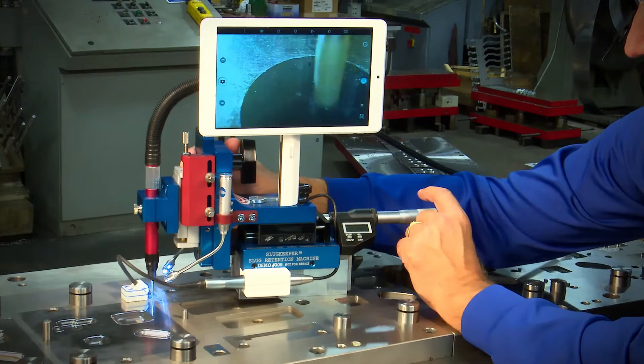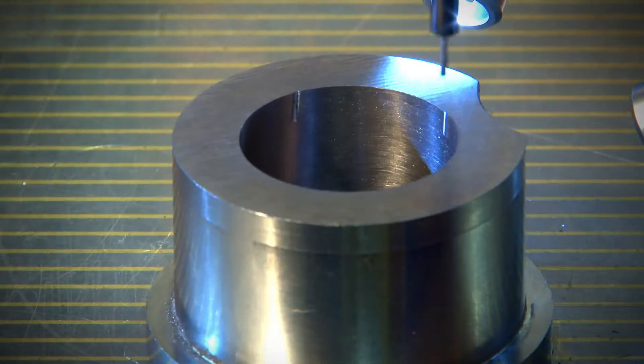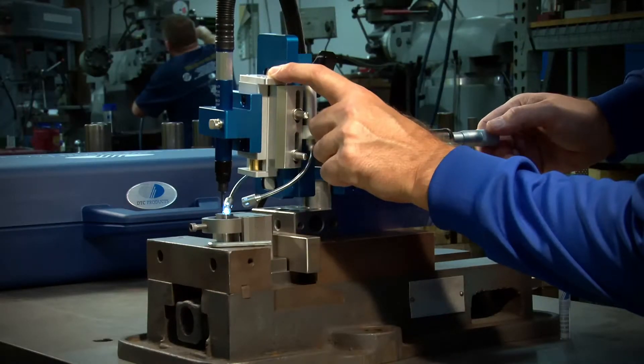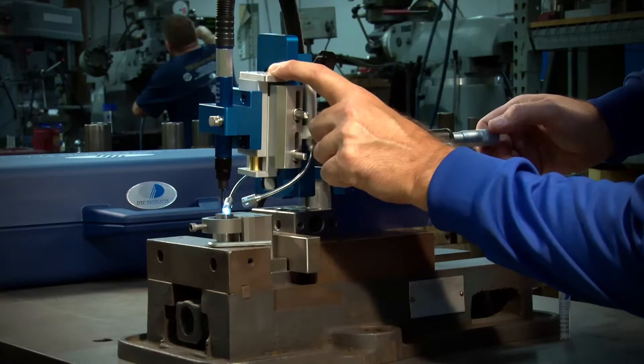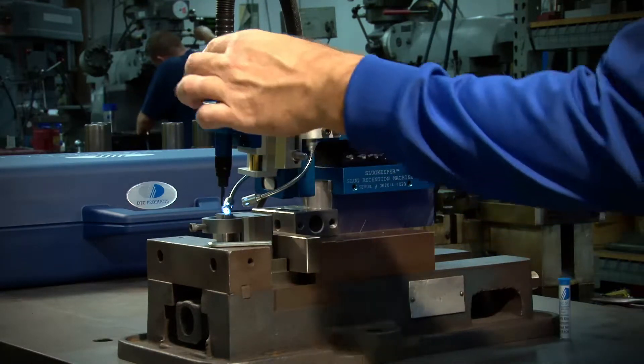The slug keeper can be used on die blocks, die inserts and die bushings in the tool room, as well as on a die while it's in the press. This same amazing machine can also be used to put grooves into guided stripper openings to vent an opening, reducing the suction caused by the retraction of the punch.